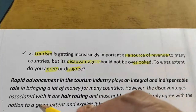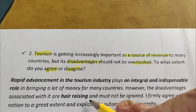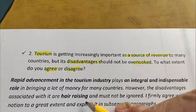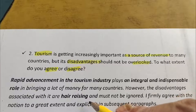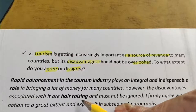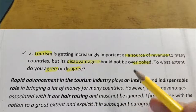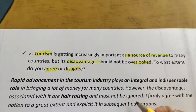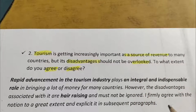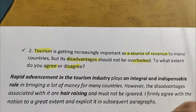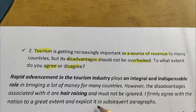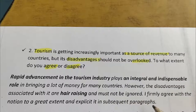However, the disadvantages associated with it are hair-raising. 'Hair-raising' means the disadvantages which tourism can bring are very dangerous, disastrous, and must not be ignored. I firmly agree with the notion — 'notion' means idea — to a great extent and will explain it in subsequent paragraphs, meaning in upcoming paragraphs. This is a band 9 essay. The greatest challenge associated with tourism nowadays is health — a very nice way to start your main body paragraph one. 'The greatest challenge' means the biggest issue, the biggest disadvantage. The problem associated with tourism nowadays is health.